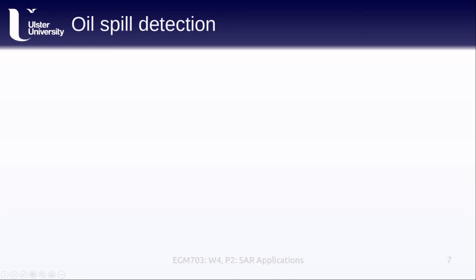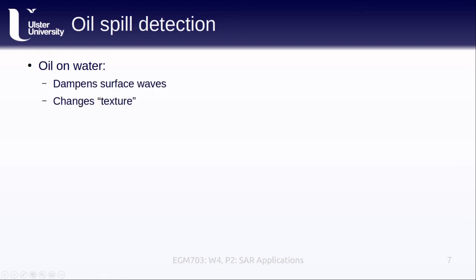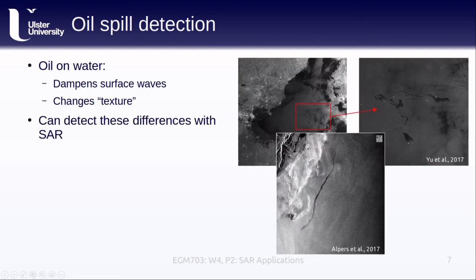In addition to changing the spectral reflectance of water, oil also dampens small surface waves known as capillary waves, which changes the texture of the surface. In particular, it makes the surface appear much darker, which means we can use SAR images to detect and observe oil spills. In these examples, we can see oil spills highlighted as dark, smooth areas surrounded by somewhat brighter, more rough areas of water. We can also see how a long streak trailing behind a ship — which we can also see in the image — indicates an oil discharge.